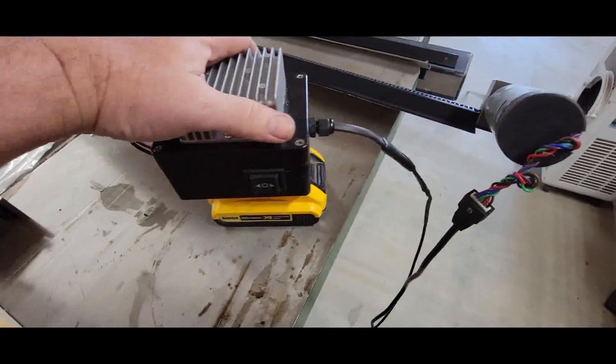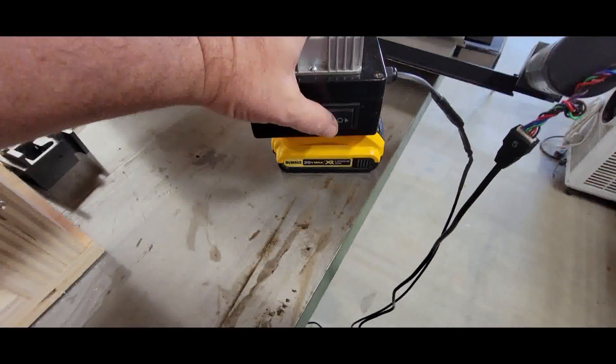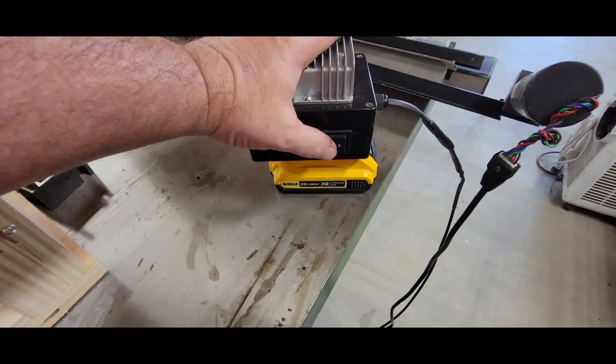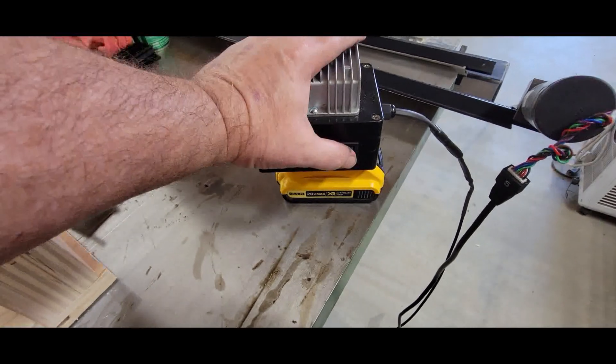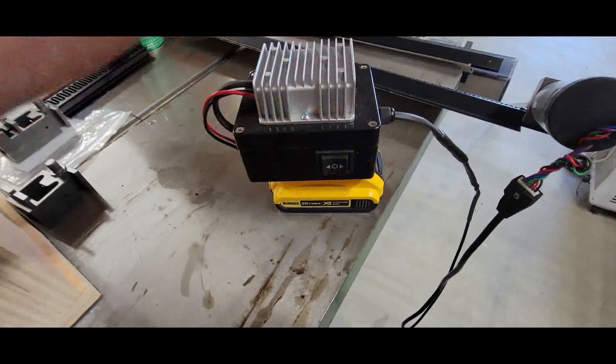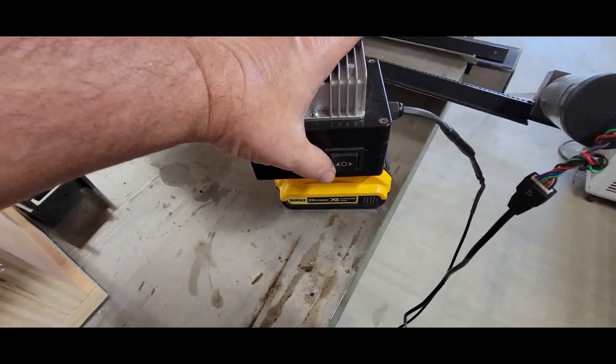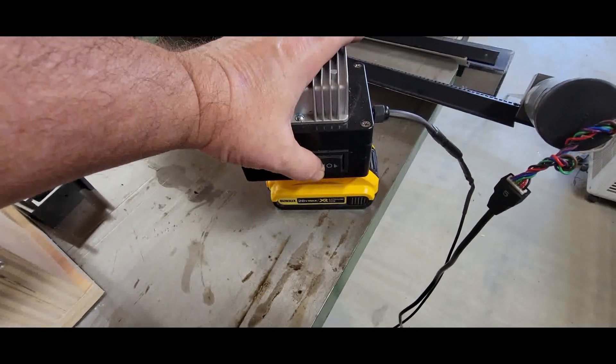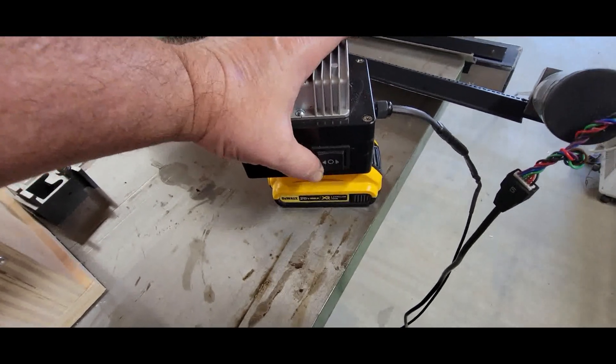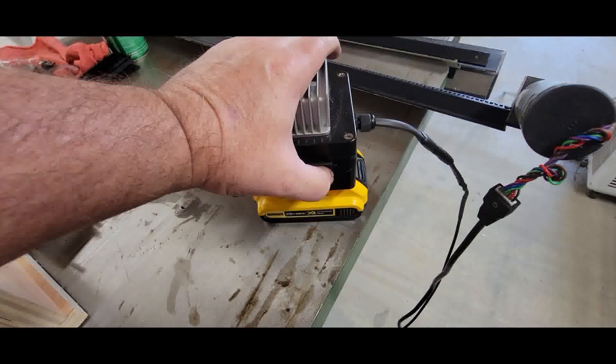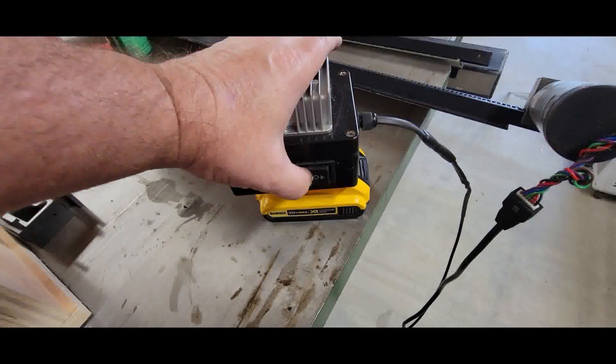I have a momentary switch right here, it's also a reversing switch. So forward sends 12 volts and a negative, and when I go backwards it's going to reverse the polarity so I can rotate the motor clockwise and counterclockwise.